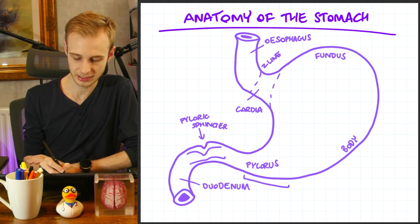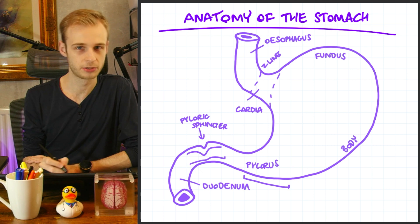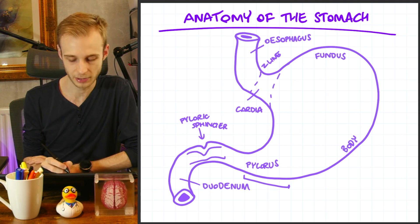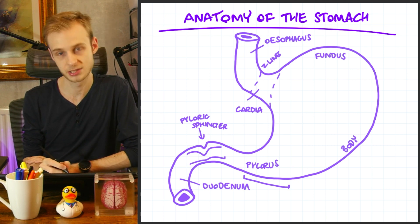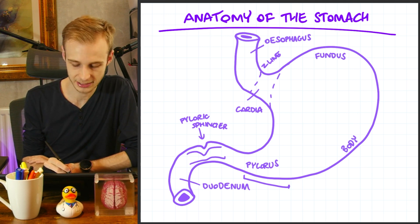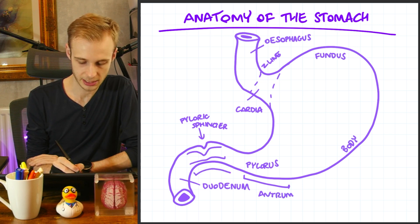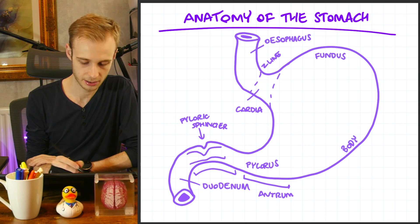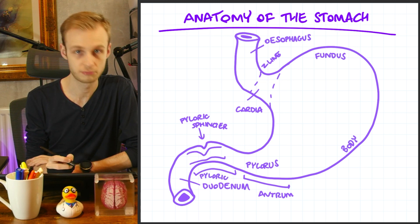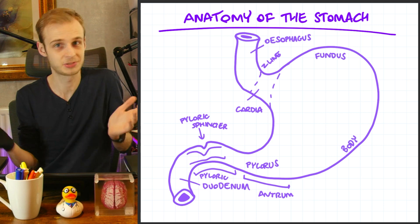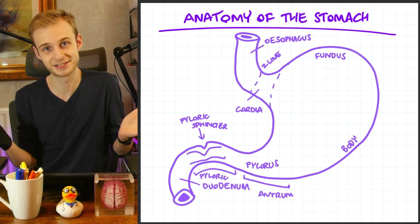More specifically, this entrance way approaching the pylorus and the pyloric sphincter is called the antrum, or the pyloric antrum. And in turn, this area that follows is called the pyloric region, because it's where the pyloric sphincter is.